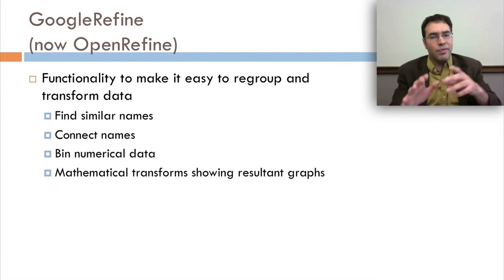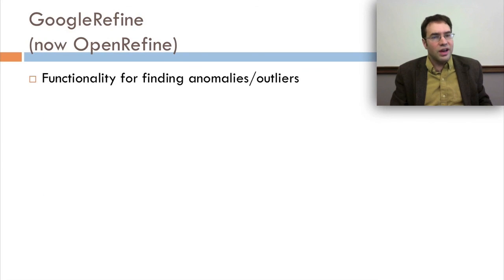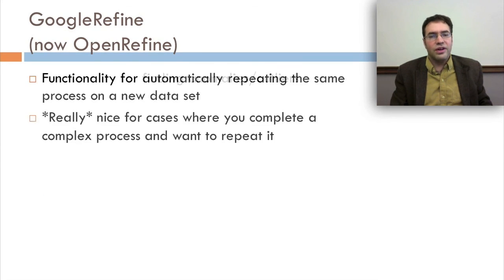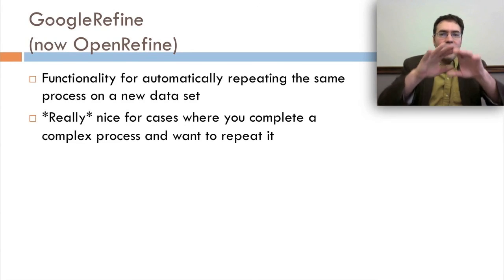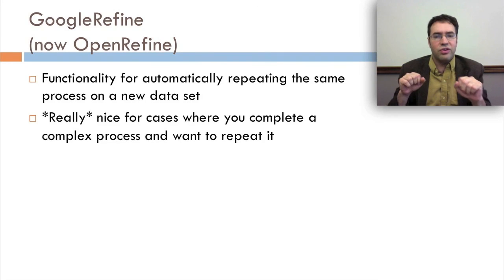It can do mathematical transforms and it actually shows you the resultant graphs. It can do text transforms and column creation. All kinds of cool stuff. It also has functionality for finding anomalies or outliers. As well as functionality for whenever you've done some data distillation, you can automatically repeat the exact same process on a new dataset. This is really nice for cases where you complete a complex process and you want to repeat it exactly. So cool.